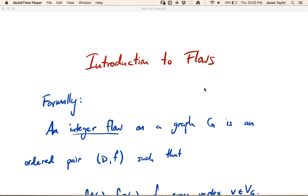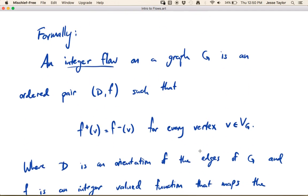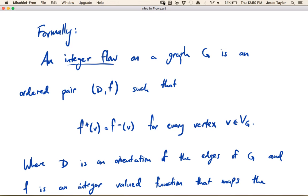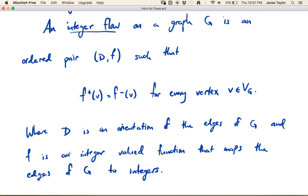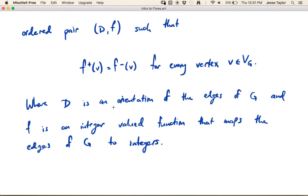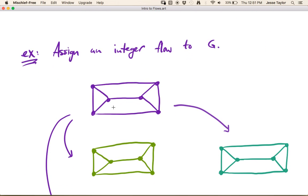In this video we're going to be introducing the idea of flows on graphs. They have a long formal definition, but let's start with that and then you'll have a better idea of what's happening once we look at some examples. An integer flow on a graph is an ordered pair consisting of d, which is an orientation of all the edges, and then a function f such that the amount flowing into every vertex and the amount flowing out of every vertex is equal. The net flow is zero at every vertex. Let's take this graph in purple called the prism.